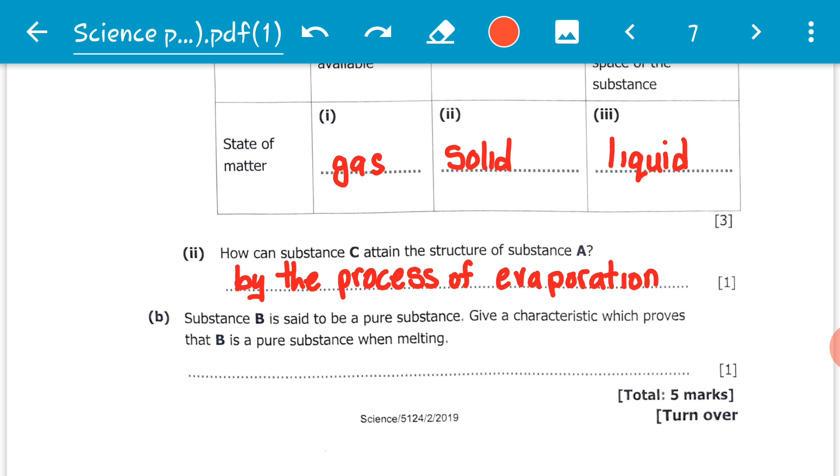Now we know that when we look at criteria of purity, we've got boiling point as one of the ways in which we can prove that a substance is pure, and we also have melting point as another.